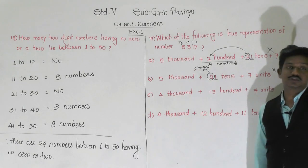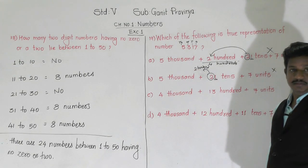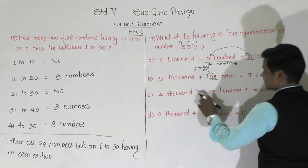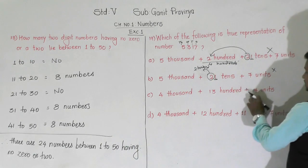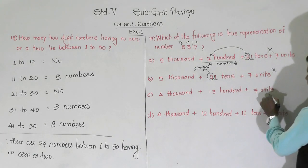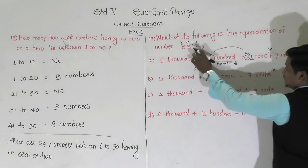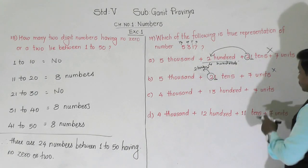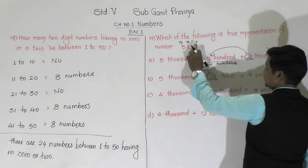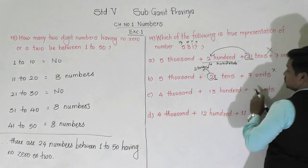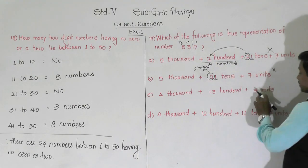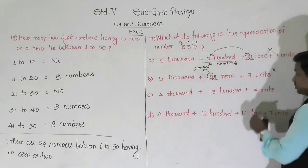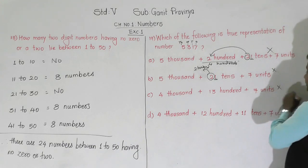Option C: 4,000 plus 1,300 plus 7 units. There is 7 units — correct. But there should be 1 ten, and here there is no tens at all. So option C is also cancelled.